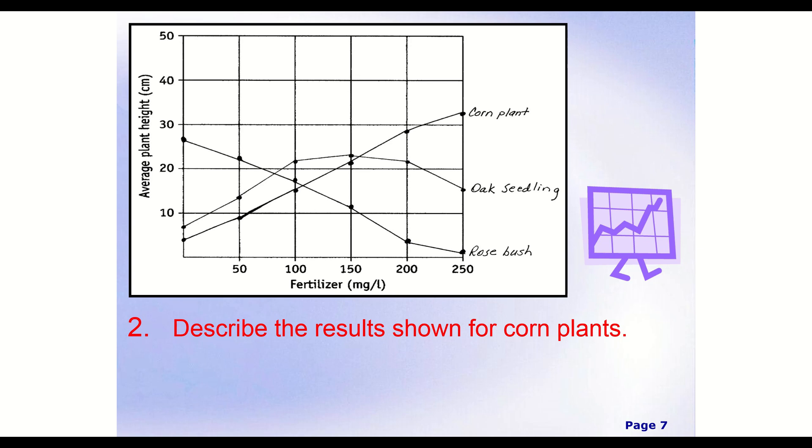All right, so moving on to our second question, we're, again, still looking at that same graph. Describe the results shown for corn plants. So now for this one, we're not going to look at all of the lines. We're just looking at one line in particular. And this time, we're just looking at our corn plants. And so that's going to be the line right here.